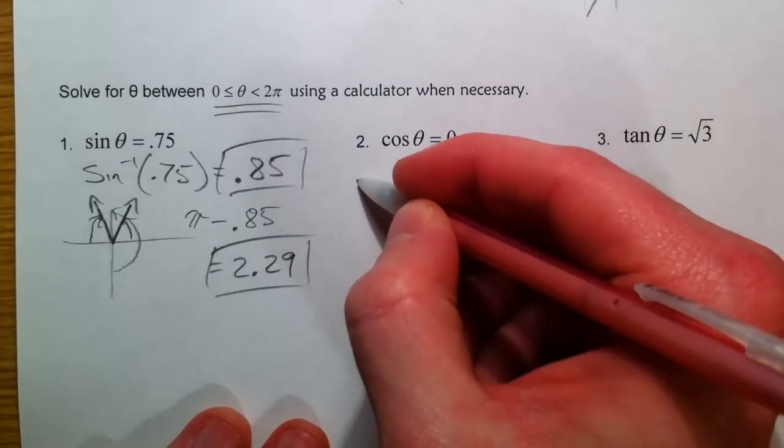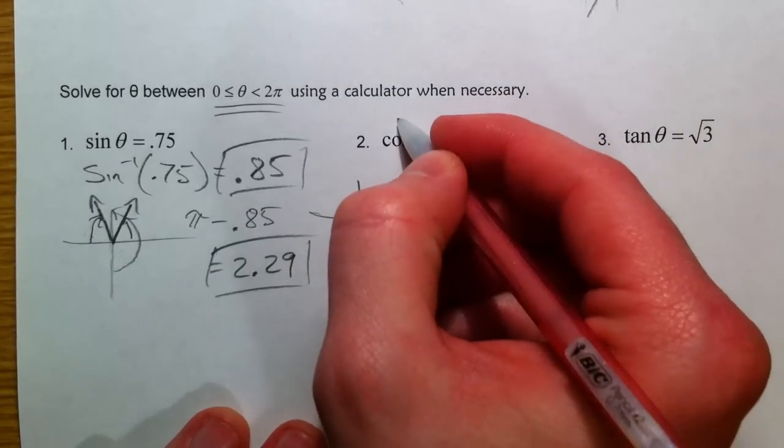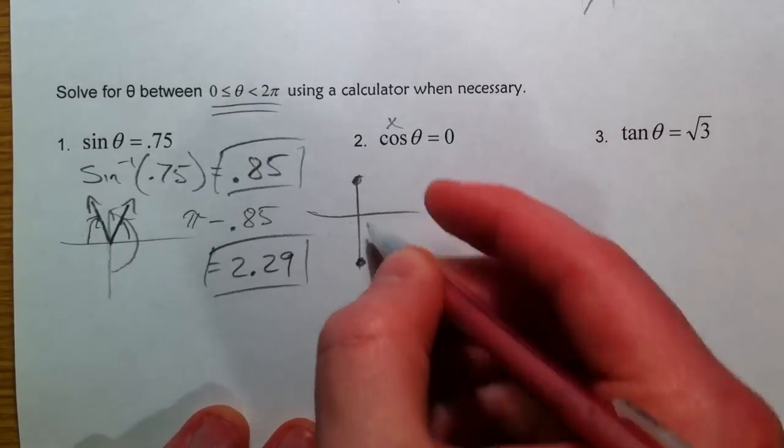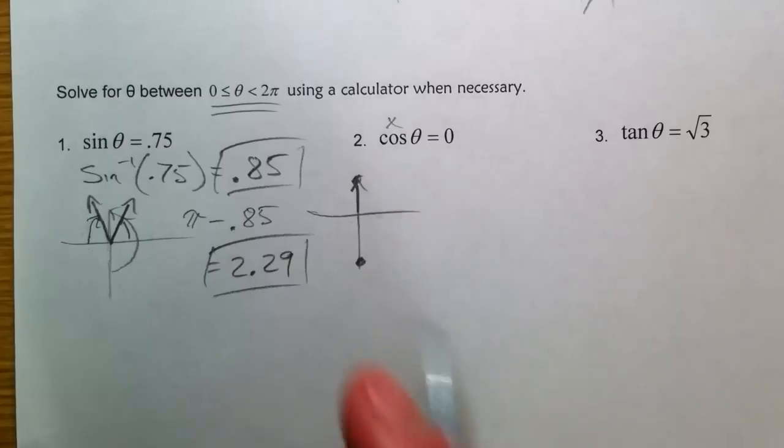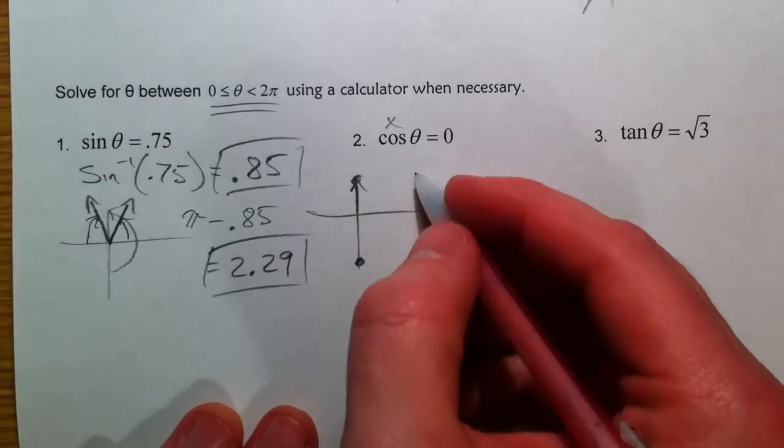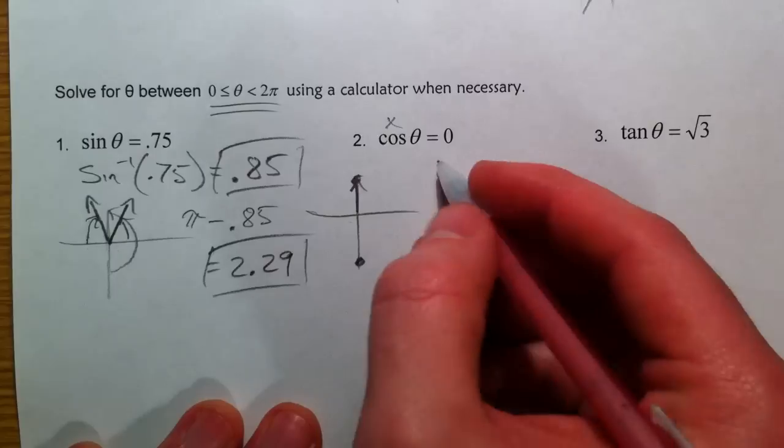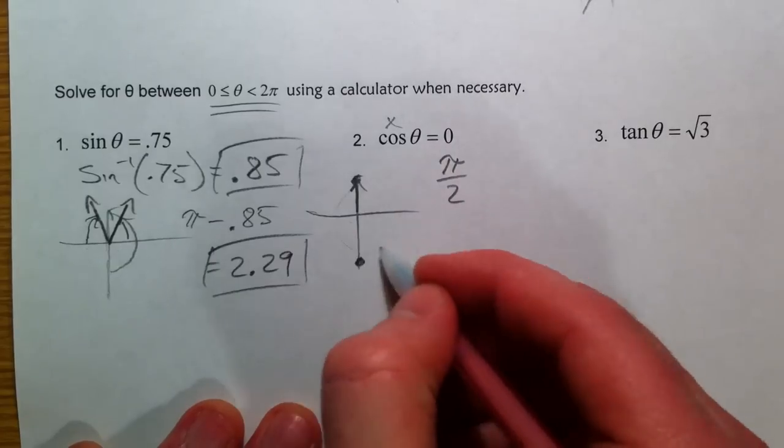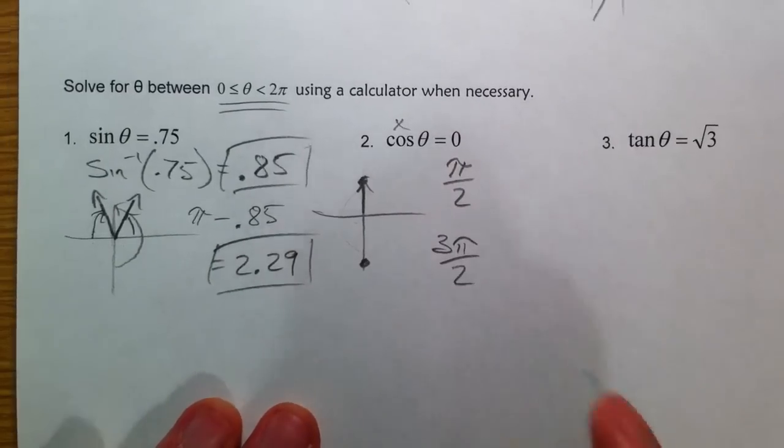Where's the cosine value equal to 0? Well, I want to know where's the x value equal to 0. Up here, down here. If you want to, you can type it in the calculator, but what if we don't have our calculator? We can still do it. Cosine value at π over 2 and at 3π over 2.